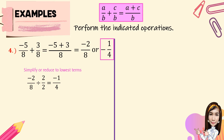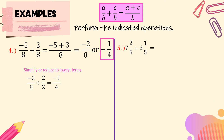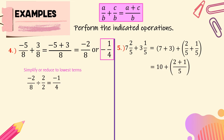For number 5, given 7 and 2 over 5 plus 3 and 1 over 5. We can add the whole numbers first: 7 plus 3. Then add the fractions: 2 fifths plus 1 fifth. 7 plus 3 is equal to 10. Then we add the numerators, 2 plus 1, and copy the same denominator, 5. That equals 10 and 3 over 5, or 10 and 3 fifths.